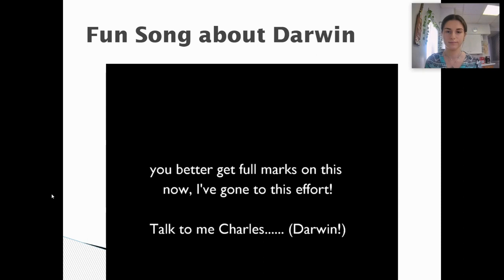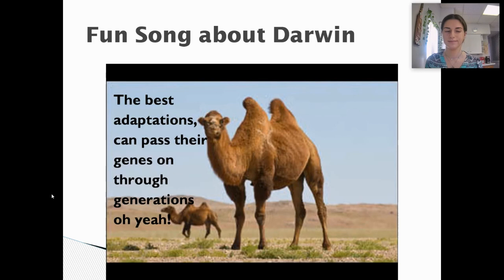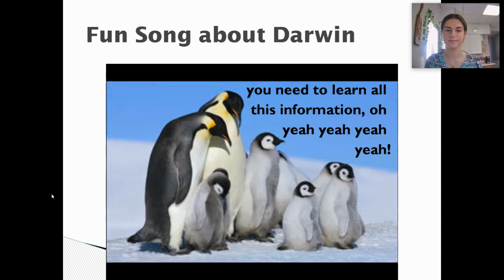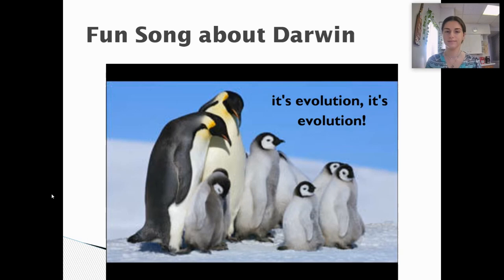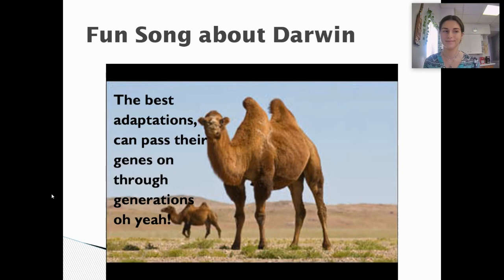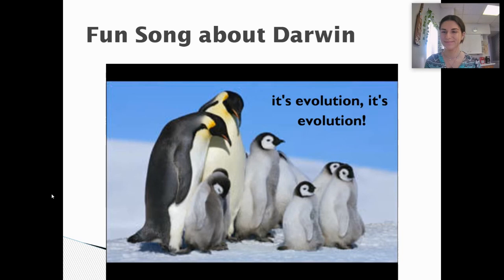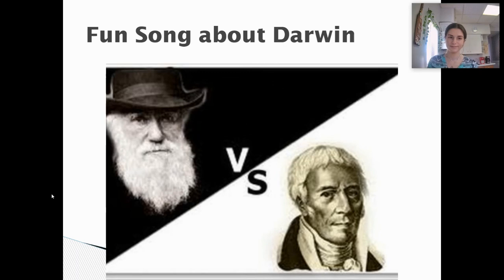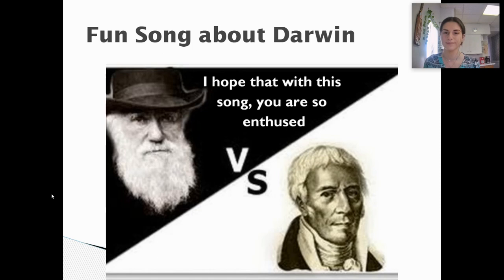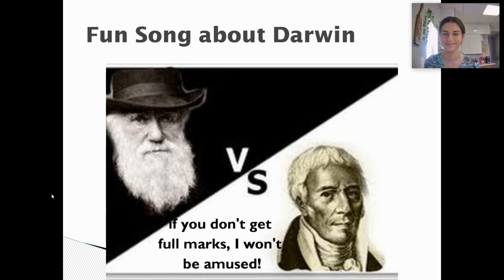The song ends: 'You all better get full marks on this now I've gone to this effort. The best adaptations can pass their genes on through generations. You need to learn all this information. It's evolution. Don't get Darwin and Lamarck confused — you need to remember both. I hope that with this song you understand, and if you don't get full marks, I won't be amused.'